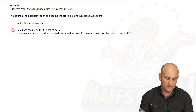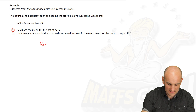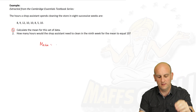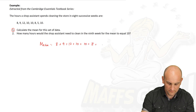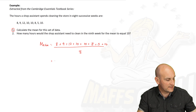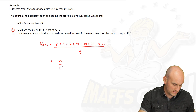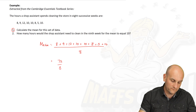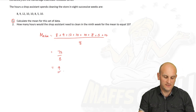The first part of the question says: calculate the mean for that set of data. Mean is the average. Mean equals the sum of all values divided by how many there are: 8 + 9 + 12 + 10 + 10 + 8 + 5 + 10, divided by 8. That gives 72 divided by 8, which equals 9. So for those 8 data items, we have a mean of 9.